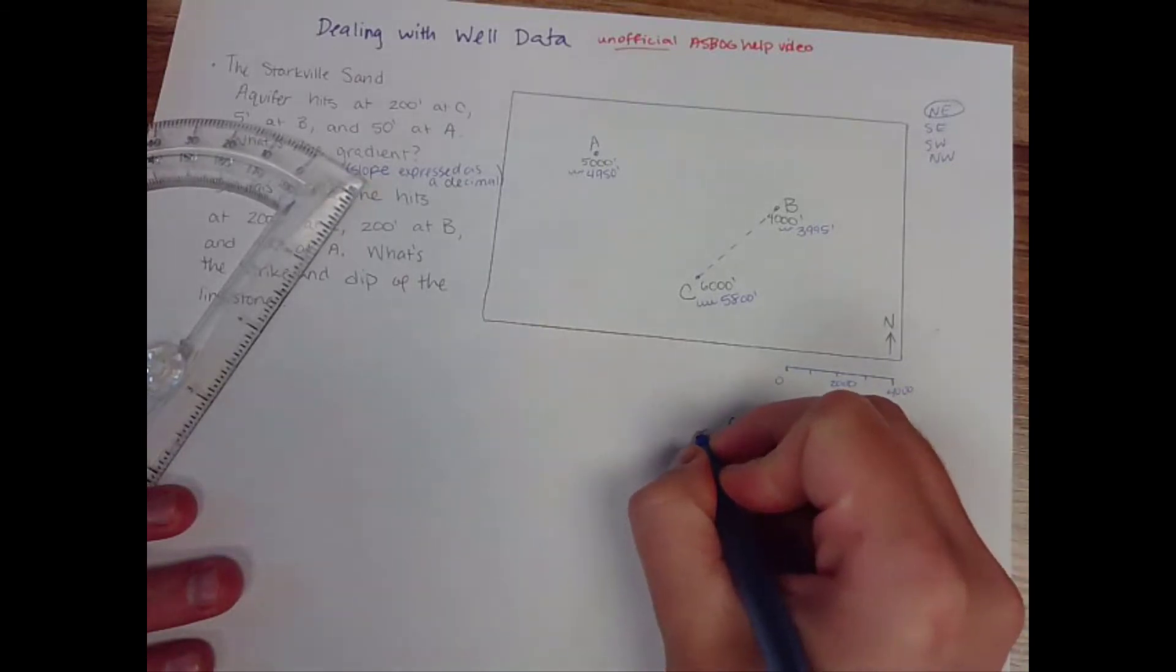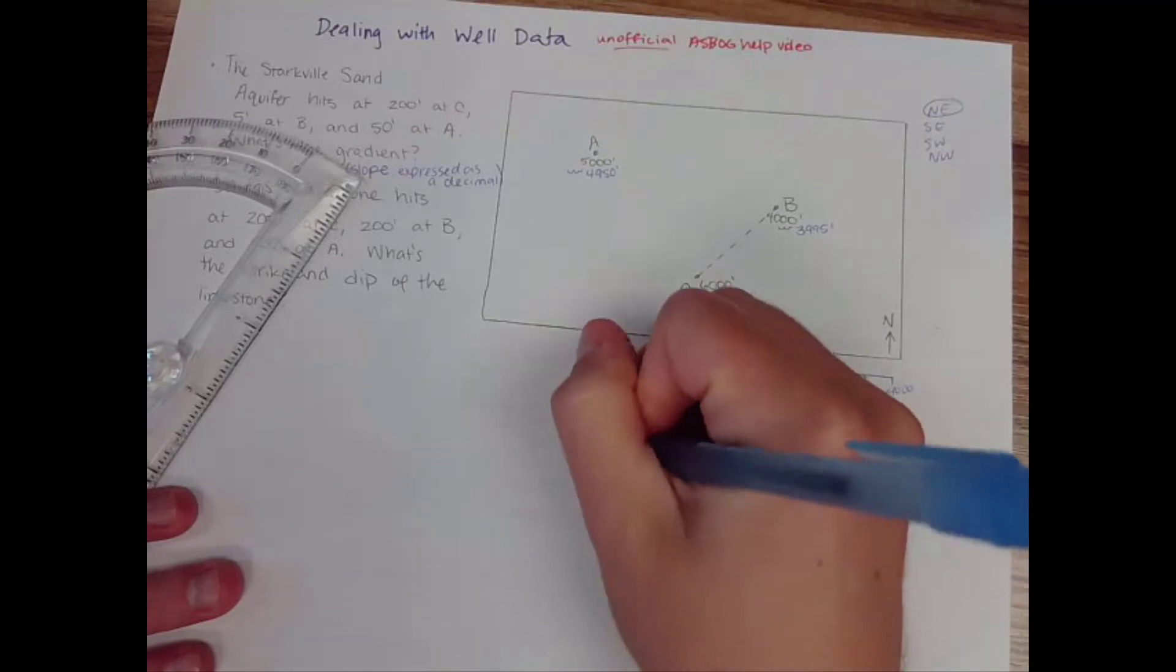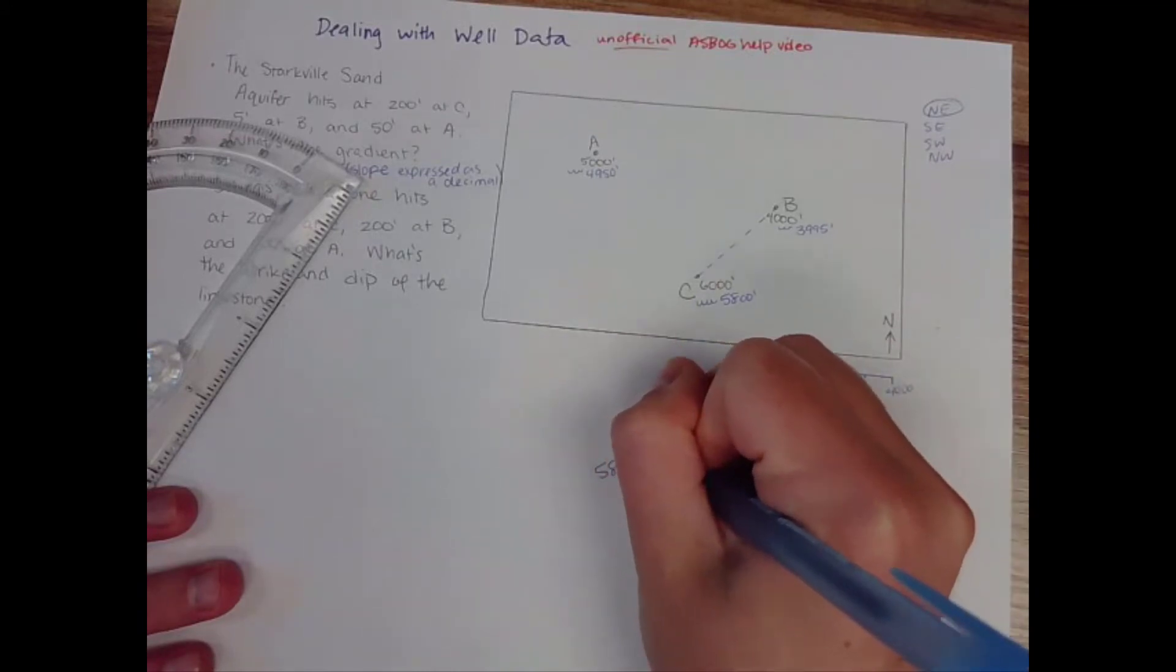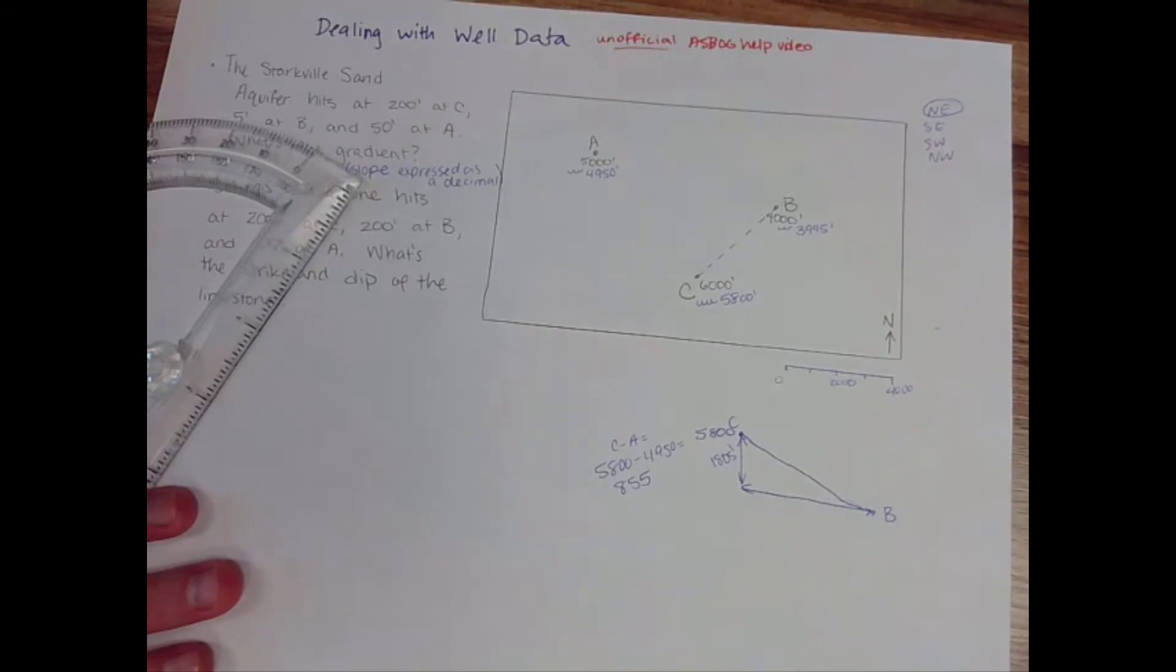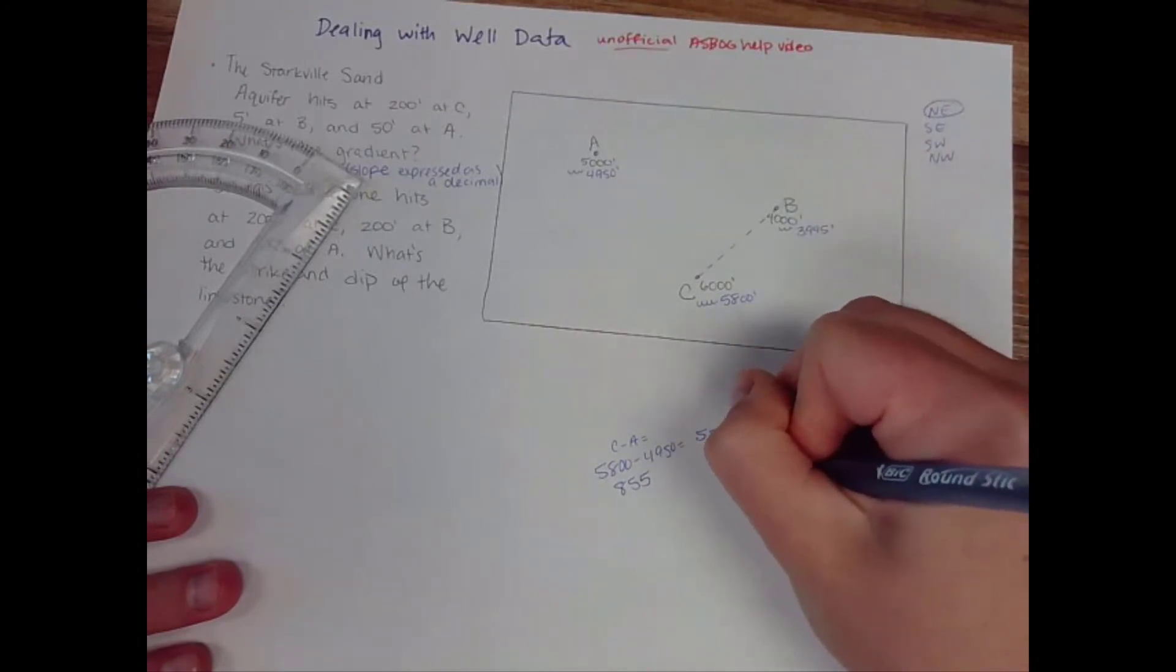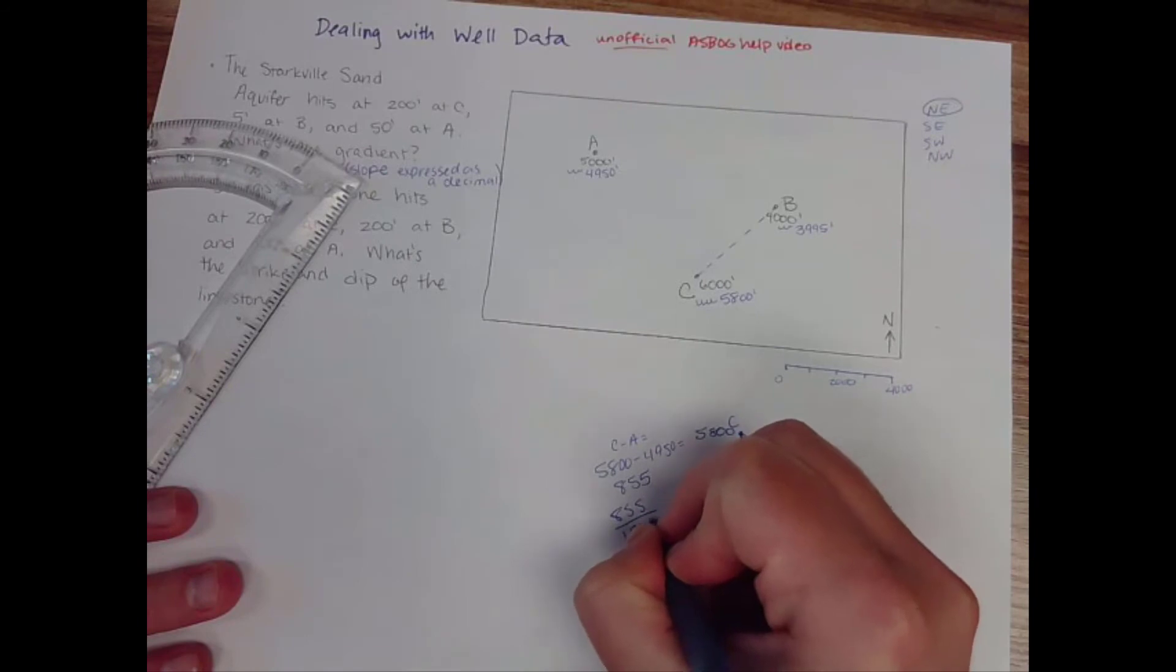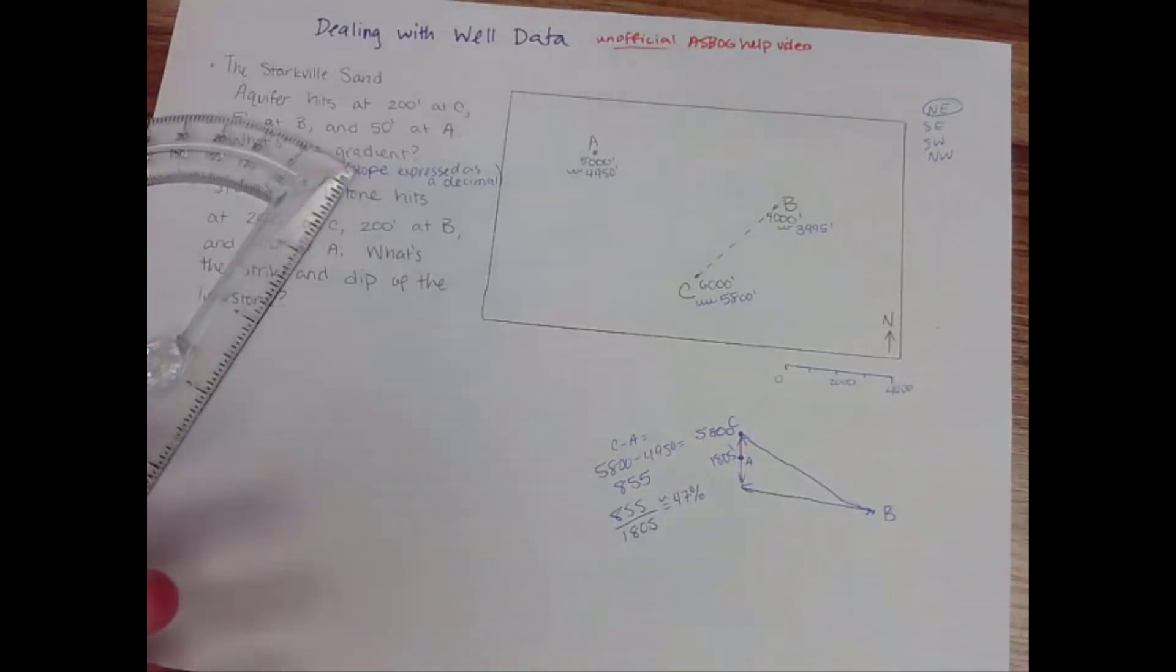Okay so this point at C was 5,800 and we know that A is at 4,950 so I'm going to subtract C minus A which is 5,800 minus 4,950 which is 850. So I can imagine coming down 850 putting a point and that is where A would land. To figure out how far down that would go if you take 850 and you divide it by 1,805 you're going to get around 47 percent. Okay so about halfway.